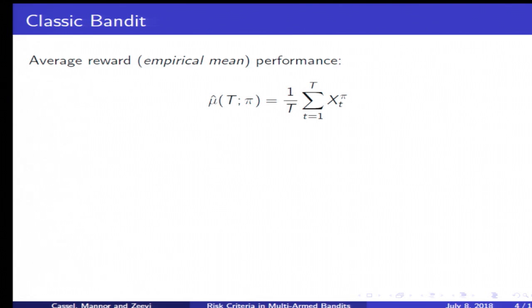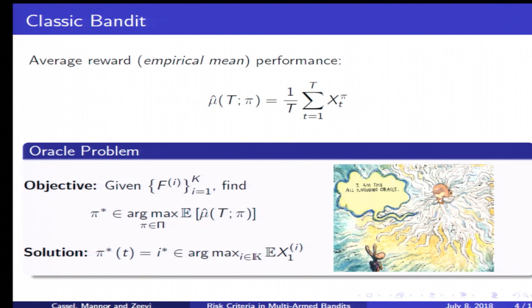Even in this simple case we don't know how to optimize this directly, so what is first considered is an oracle problem where the oracle is aware of the arm distributions. Planning becomes simple and it simply chooses the arm with the highest mean.